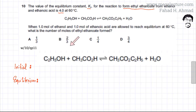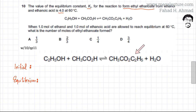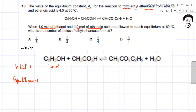I've copied the equation here and I'm going to draw a table. I'll write down the initial moles of ethanol, ethanoic acid, ethyl ethanoate, and water. Initially, the question states one mole of ethanol and one mole of ethanoic acid were mixed. Since nothing else was added, the initial moles of the ester and water are both zero.